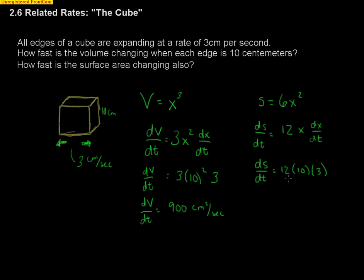So we're going to wind up with 3 times 12, 36 times, so that's 360. So the surface area is changing at a rate of 360 centimeters squared per second.